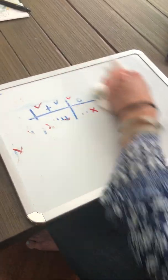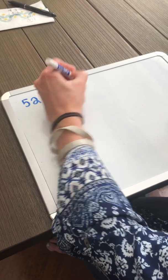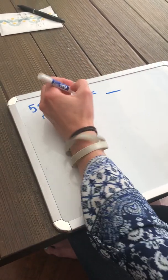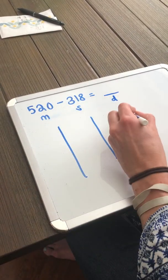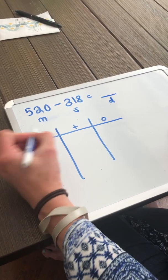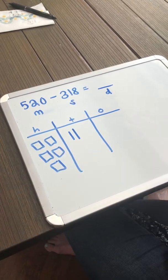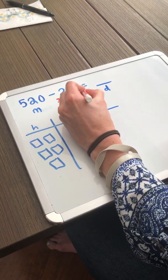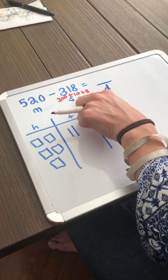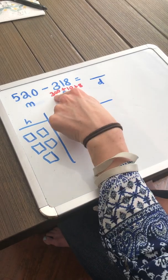Let's do one more problem today. Let's do the problem 520 minus 318. My minuend is 520. My subtrahend is 318 and I am looking for the difference. So I'm only going to represent my minuend. My minuend is 520. My subtrahend is 318. 300 plus 10 plus 8 is 318. It's time to subtract. I have 520 and I need to take away 318.